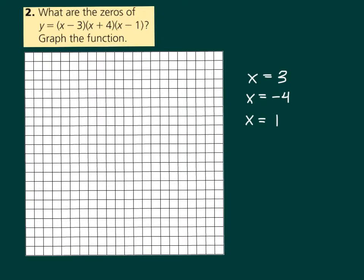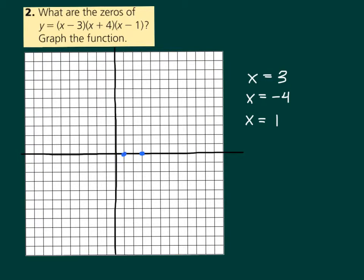So then we want to graph this. We have zeros at 3, 1, and negative 4. And so we have to remember the definition of zero so that we understand that these being zeros mean that's where it crosses the x-axis. What would be the end behavior of this polynomial?